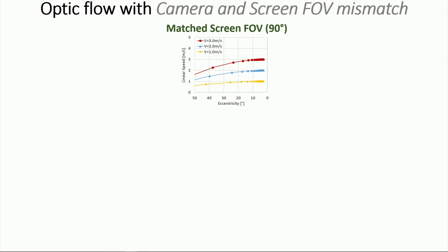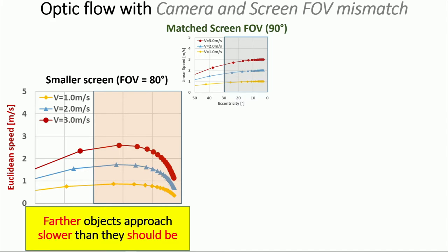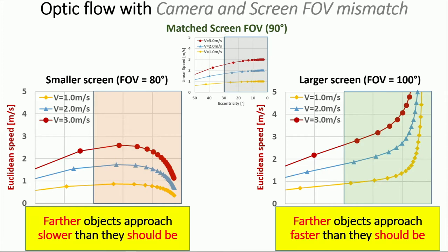Going back to the effect of the space distortion on the optic flow, here is the ground truth optic flow. If the scene is shown on a smaller screen, which causes spatial compression, compared to the ground truth 3D optic flow, we can see that speed of the far objects becomes slower than they should be. And if the scene is shown on a larger screen, which causes space expansion, speed of the far objects becomes faster than they should be.